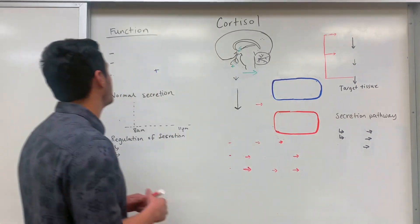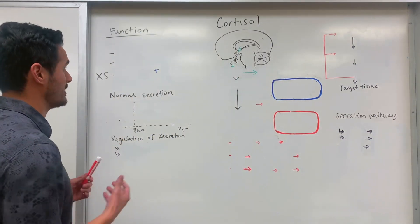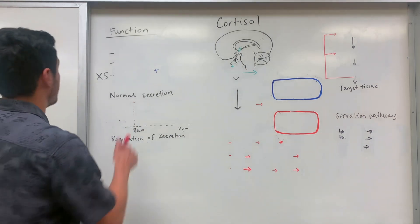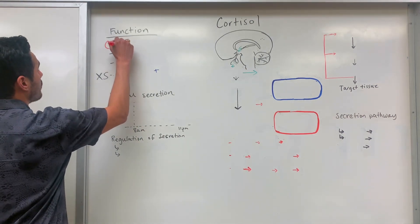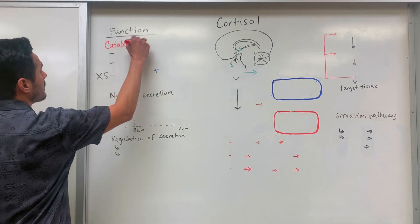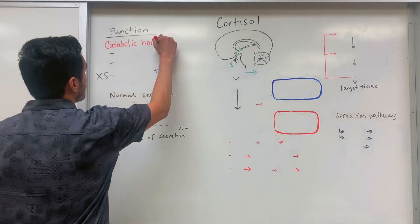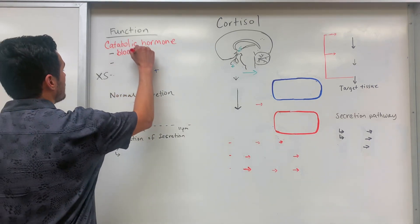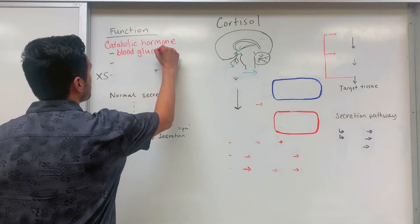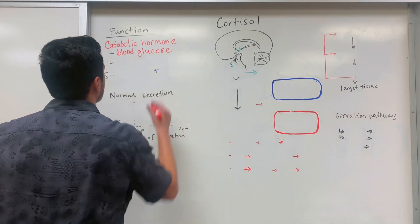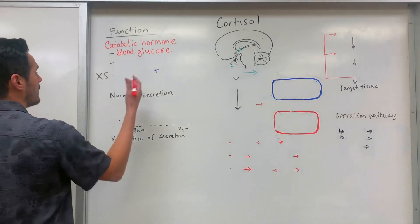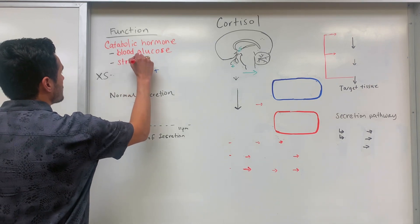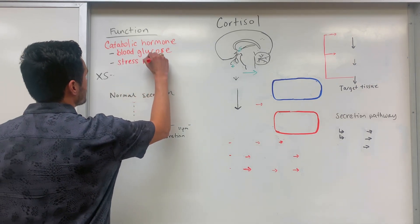The first thing I'll say about cortisol is what its overall function is — what does it do? So cortisol is a catabolic hormone that helps to regulate our blood glucose levels. Cortisol is also responsible for helping with stress resistance.